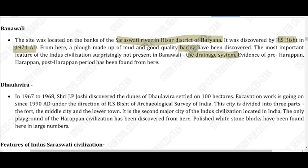Evidence of pre-Harappan, Harappan, and proto-Harappan periods has been found from here. Banawali is one of the rare sites where features of all three Harappan civilization periods are found. So to summarize: Banawali is on the Saraswati River, discovered by RS Bisht in 1974, barley was found here, there is no drainage system, and all three Harappan periods are represented.